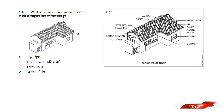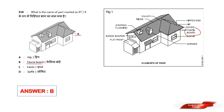What is the name of the part marked as X? Options are: Hip, Fascia board, Eaves, Soffit. Answer option B — Fascia board. Fascia board is labeled as the face board. So answer option B, Fascia board.